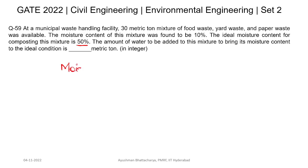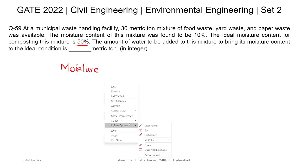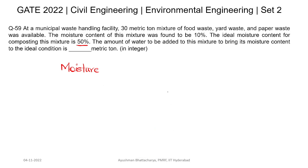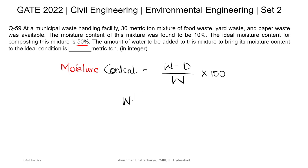We know moisture content is equal to wet weight of municipal solid waste minus dry weight of municipal solid waste, divided by wet weight of municipal solid waste, into 100. Here W stands for wet weight of municipal solid waste and D stands for dry weight of municipal solid waste.